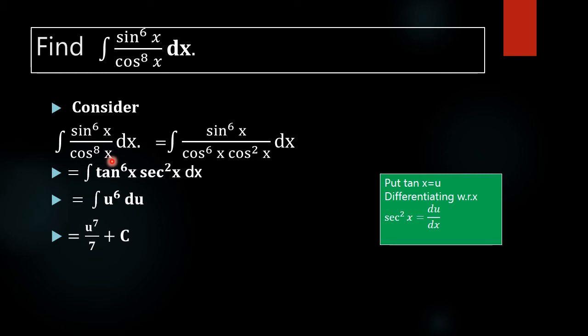In the next step we are giving the value of u here. That is tan raised to 7x divided by 7 plus C, which is our required answer.